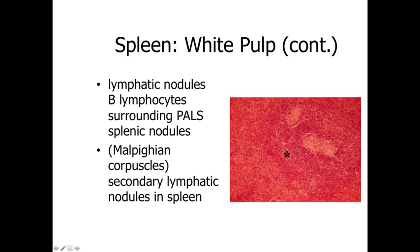Outside of the central artery and the periarterial lymphatic sheath, at certain locations we're going to have lymph nodules — an indication that we're looking at B lymphocytes capable of producing antibodies. In the spleen, these are called Malpighian corpuscles, giving them a specialized name. Malpighian corpuscles are lymphatic nodules found within the spleen that are reactive — in essence, secondary lymphatic nodules within the spleen.